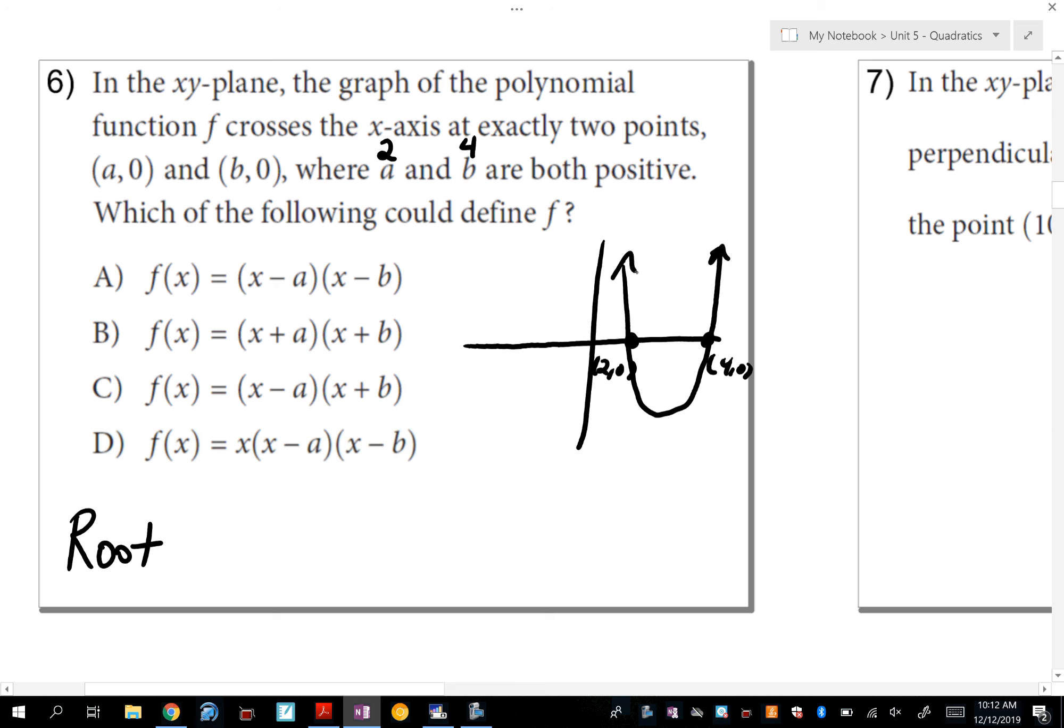Ultimately, I'm trying to find the answer where my roots of 2, 0, and 4, 0 are going to make this true. So if you look at answer choice A, if I were to replace that A with 2 and the b with 4, do my roots of 2 and 4 make each of these 0? And you'll notice 2 minus 2 is 0, and 4 minus 4 is 0, so they are going to make it 0, so A is the answer.